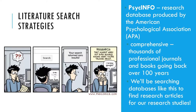PsycInfo consists of individual records for each article, book chapter, or book in the database. Each record includes basic publication information, an abstract or summary of the work, and a list of other works cited by that work. A computer interface allows entering one or more search terms and returns any records that contain those search terms. Each record also contains lists of keywords that describe the content of the work, and a list of index terms. The index terms are especially helpful because they're standardized — research on differences between males and females is always indexed under 'human sex differences,' and research on note taking is always indexed under 'learning strategies.' If you do not know the appropriate index terms, PsycInfo includes a thesaurus that can help you find them.